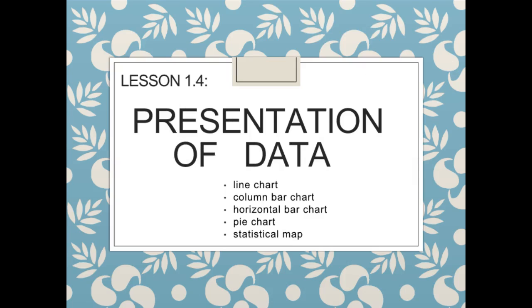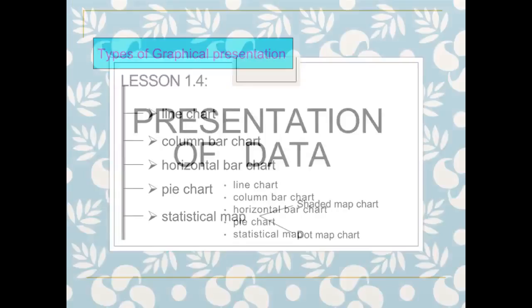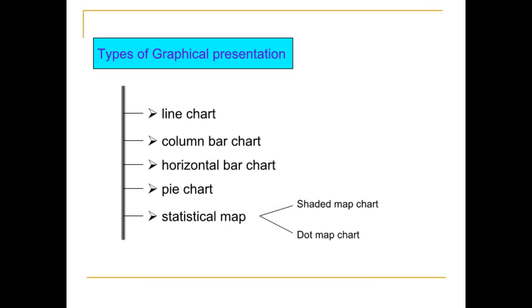In Lesson 1.3, learners were taught how to present data in a tabular form, while in this lesson learners will be taught how to present data using an appropriate graphical presentation. There are five types of graphical presentation: the line chart, column bar chart, horizontal bar chart, pie chart, and statistical map.